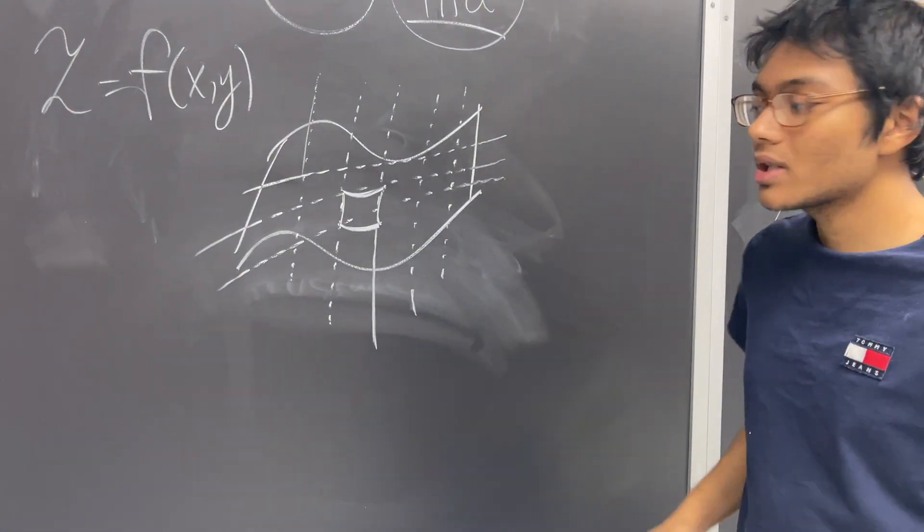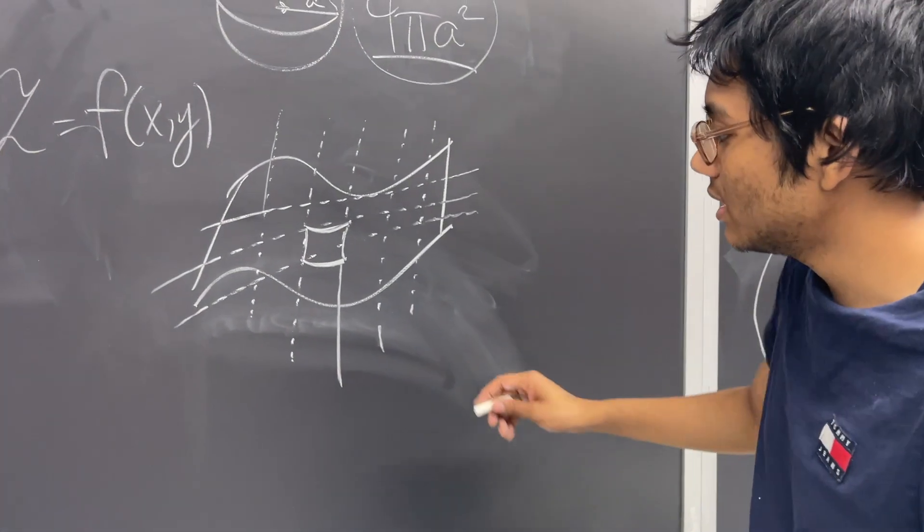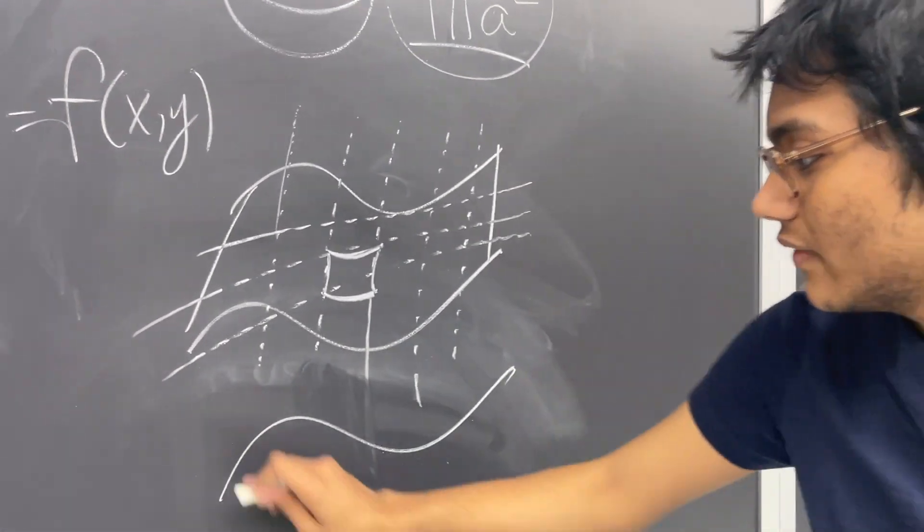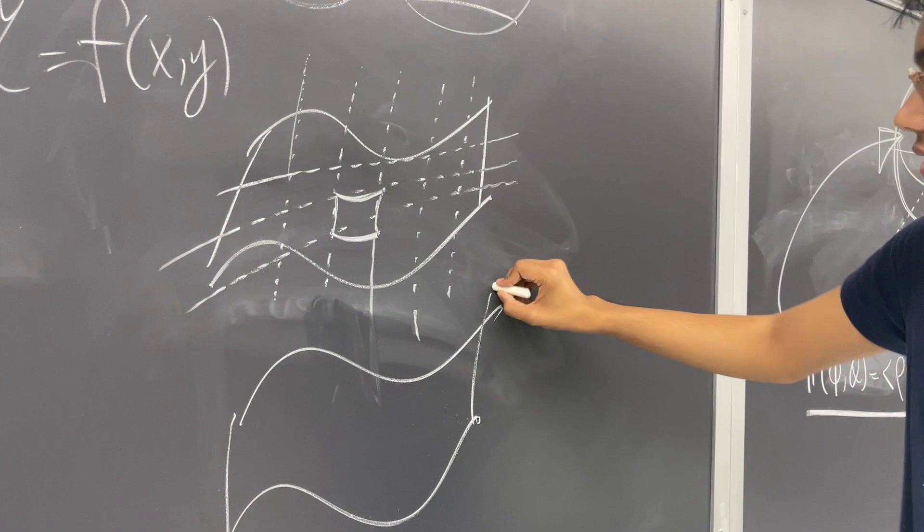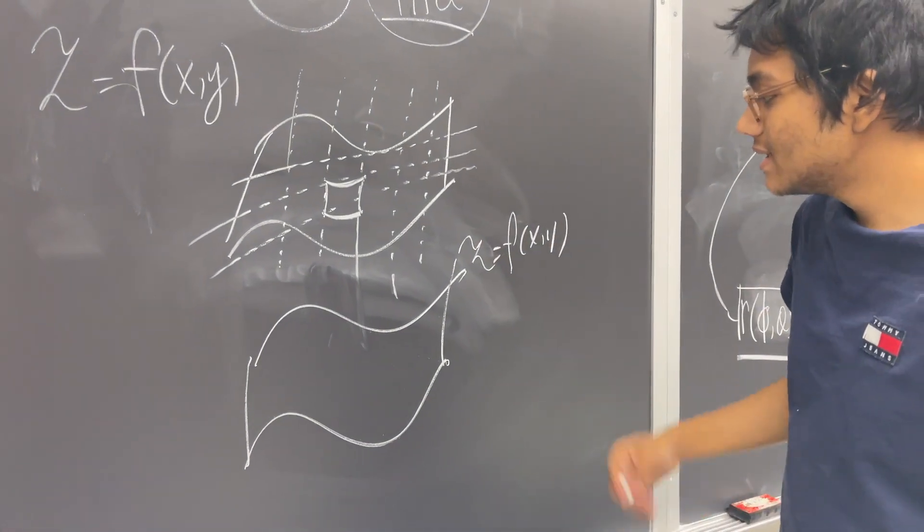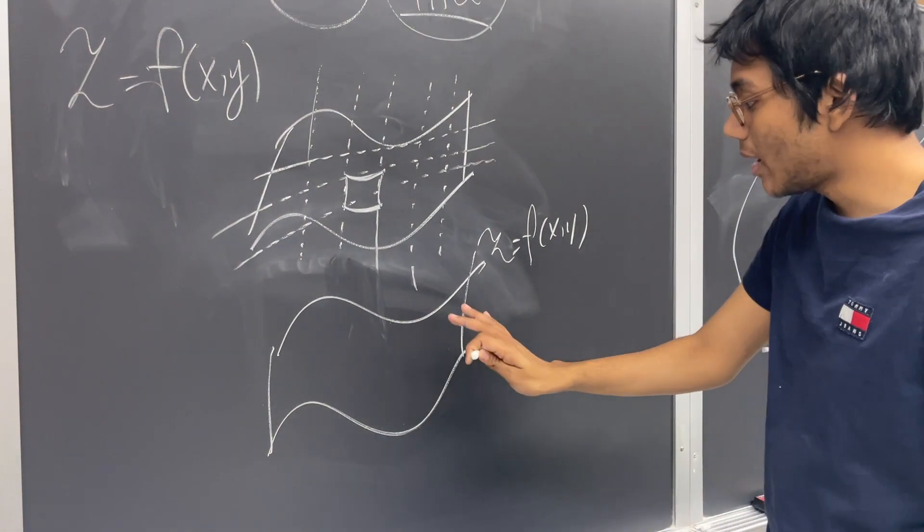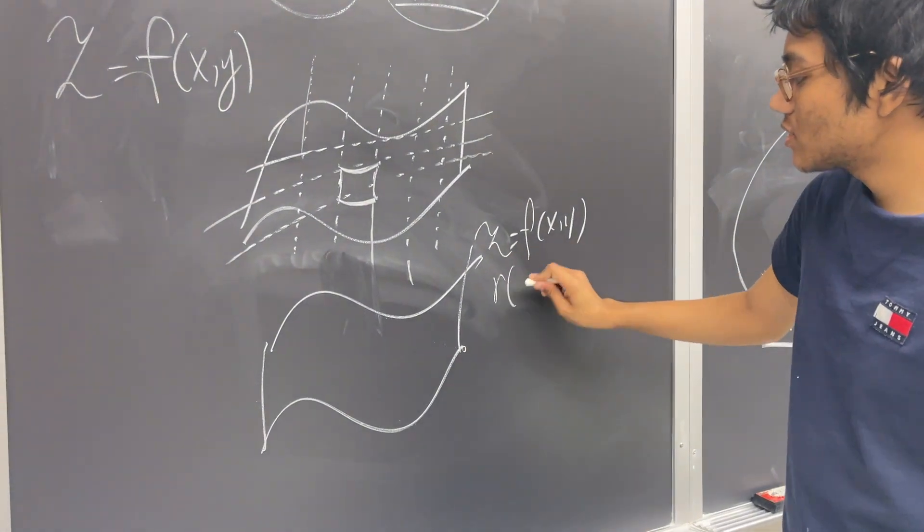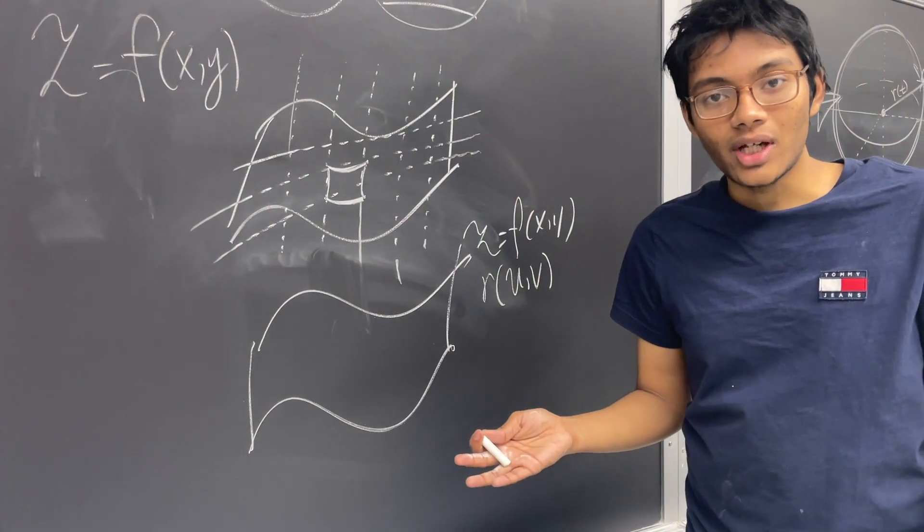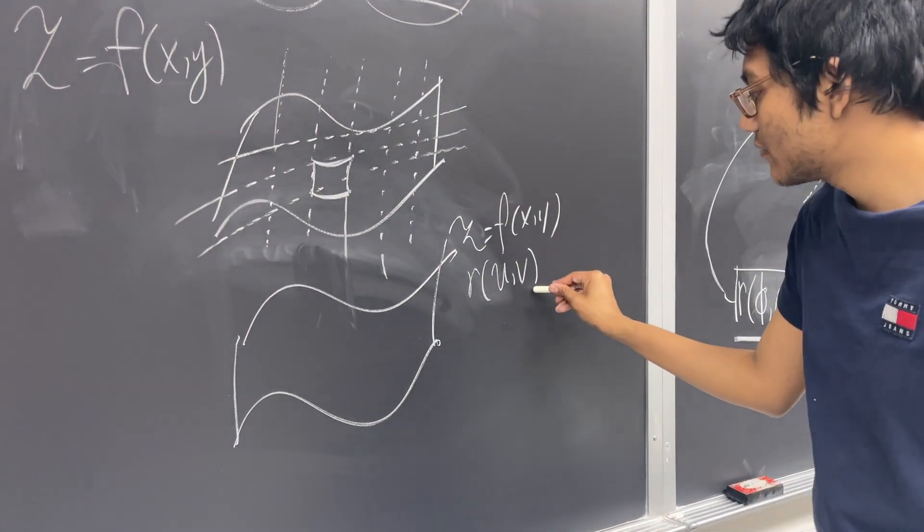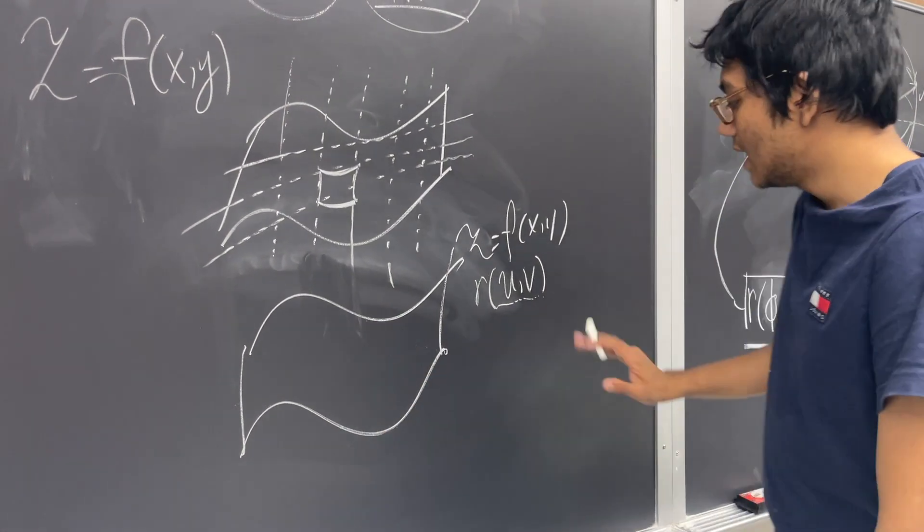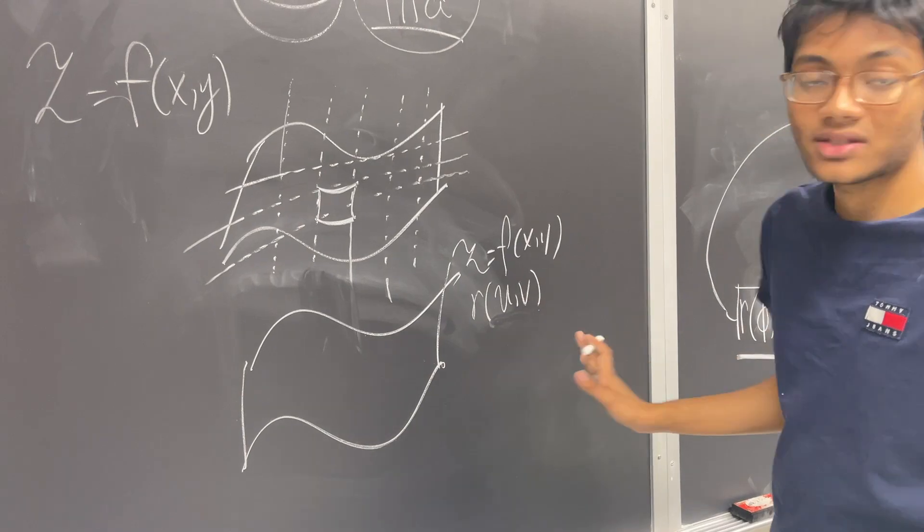So what we're going to do is we're going to use a very clever trick. So here's our trick. Our trick is we have our surface. So here's our surface, z = f(x,y). And this surface, if you parametrize this surface, then we can describe it as r(u,v). Just like we parametrized the sphere before in terms of two parameters, we can parametrize any general surface in terms of two parameters. Let's call them u and v.